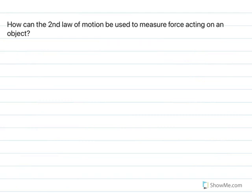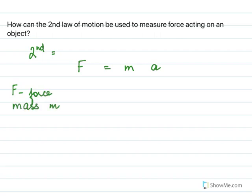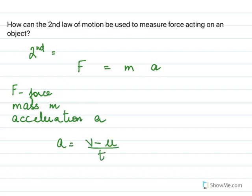How can the second law be used to measure force? By the second law, F = m × a. So we can find the force if we know the mass M and the acceleration a. Acceleration is (v − u)/t, so if we know mass and acceleration we can find the force. Hence the second law is used to measure force.